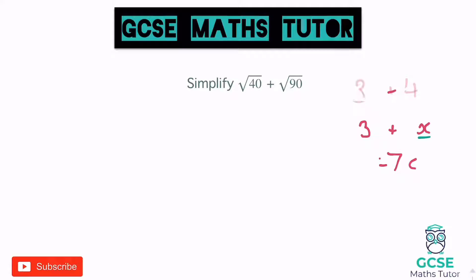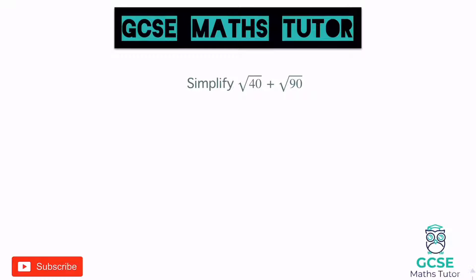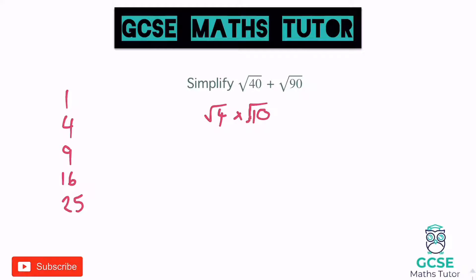Let's see if we can simplify these down. The square root of 40 - let's have a look at that first. Remember, just write down your square numbers: 1, 4, 9, 16, 25. The square root of 40 is the square root of 4 times the square root of 10, which gives us 2 lots of the square root of 10 - so 2 root 10 - since root 4 is 2.